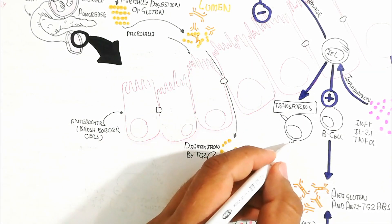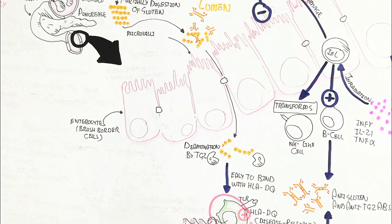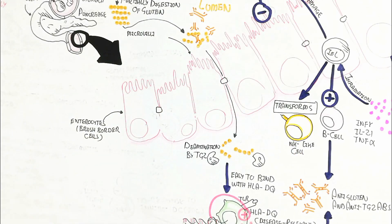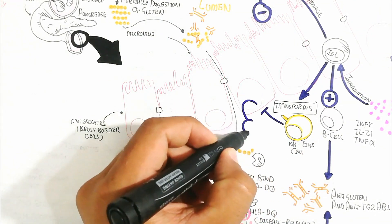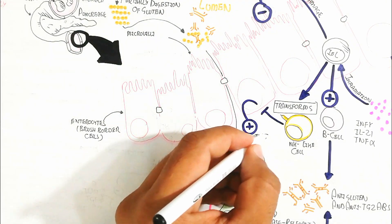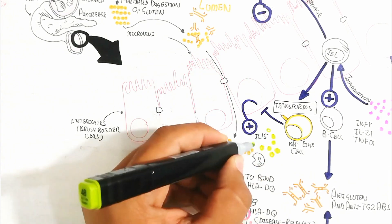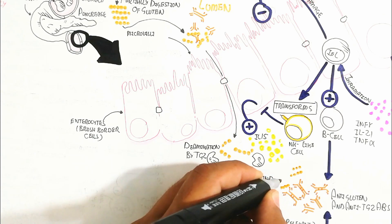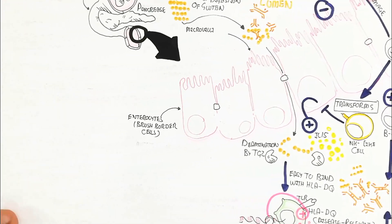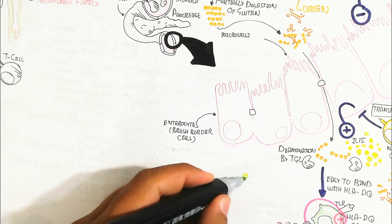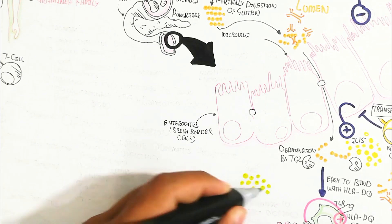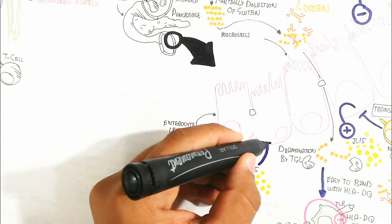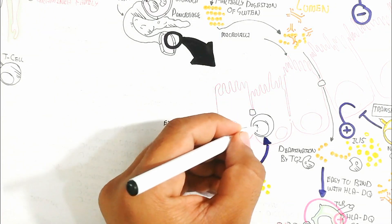Intraepithelial leukocytes are transformed by inflammation into natural killer-like cells, which kill infected enterocytes and trigger apoptosis. Interleukin-15 is also produced by damaged enterocytes, which further triggers intraepithelial leukocytes to kill more epithelial cells, leading to cell injury and hyperplasia.